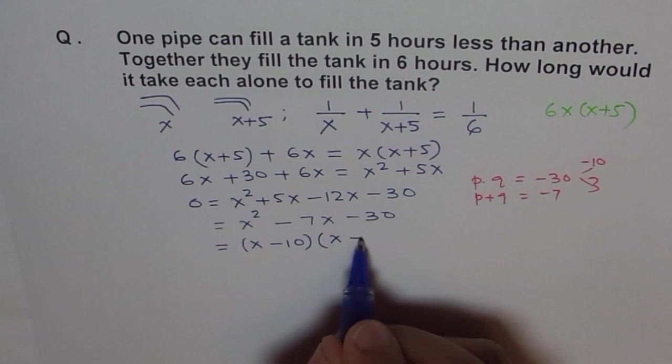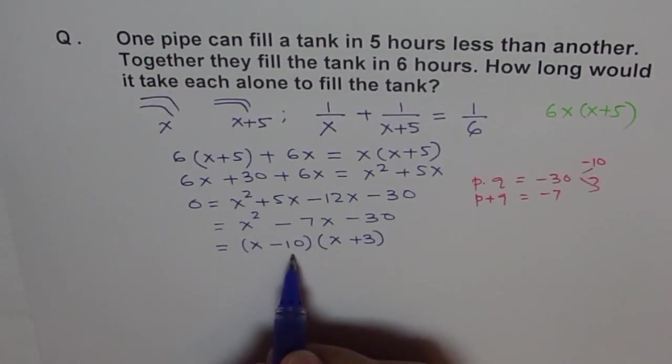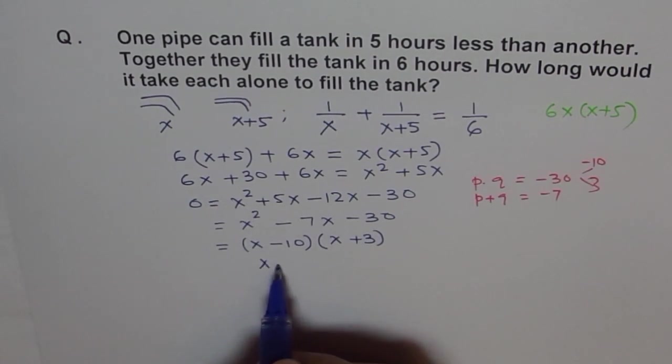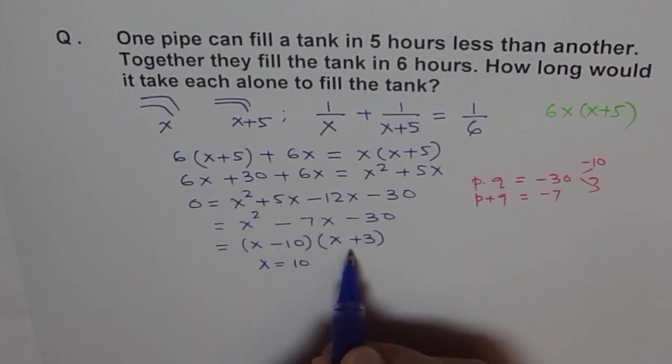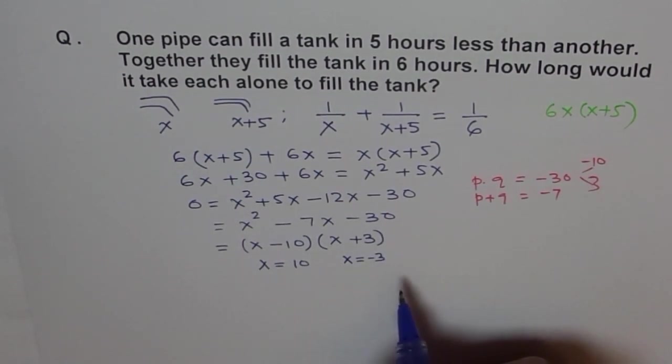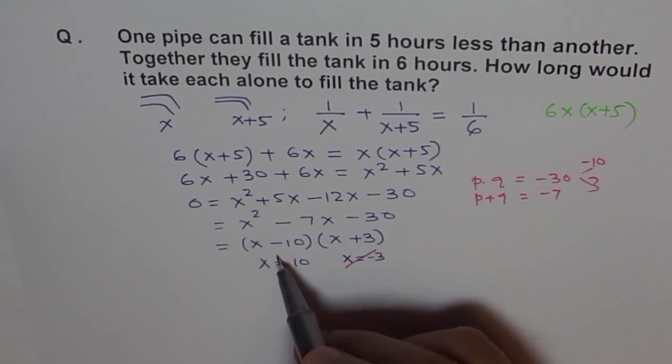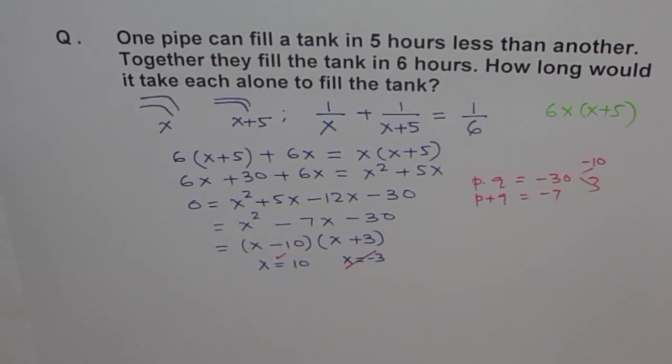We can write this in factored form: x minus 10 times x plus 3. This can be zero only when x equals plus 10. So that gives us x equals plus 10, and this gives us x equals minus 3. Well, our rate of filling cannot be negative so this is not permitted, but this is okay. So we'll say x is 10 when one pipe, which is the bigger one and faster one.